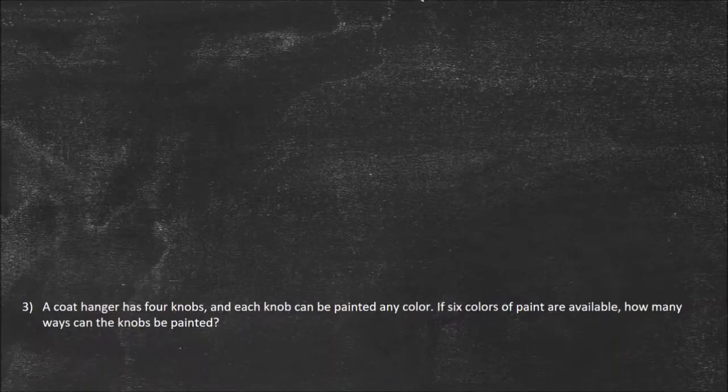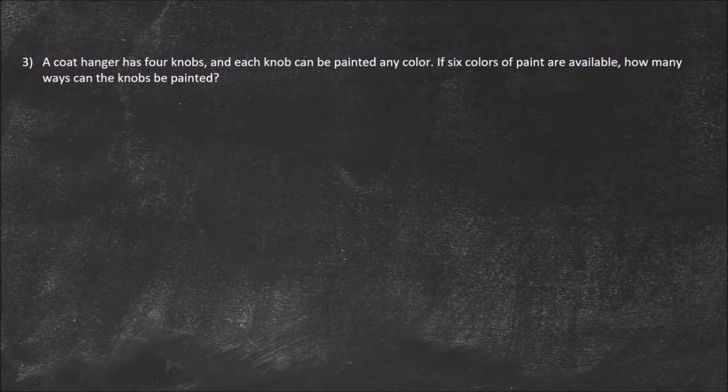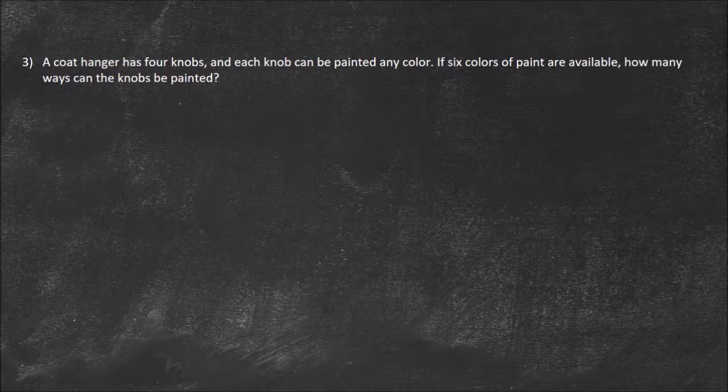Next one. A coat hanger has four knobs, and each knob can be painted any color. If six colors of paint are available, how many ways can the knobs be painted? Is this a permutation or a combination? I notice I can repeat any of the six colors. It doesn't say that I can't. So this is going to be one with repetition. I have four knobs.